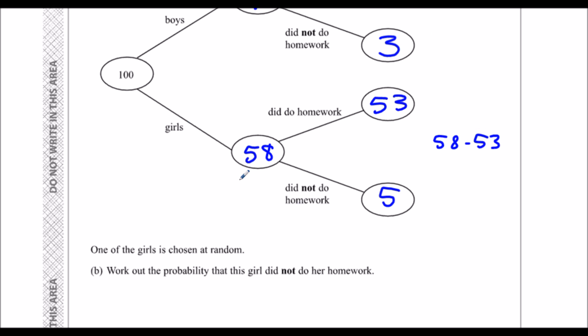One of the girls is chosen at random - what is the probability they did not do their homework? How many girls did not do homework? Five. Out of how many? It's only the girls we're looking at, so out of 58. The probability is 5 out of 58.